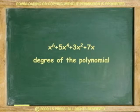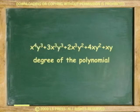For example, the degree of this polynomial is six because the largest exponent is six. Another example. The degree of this polynomial is seven because the highest sum of the exponents of the polynomial is seven.